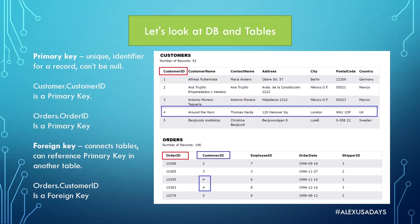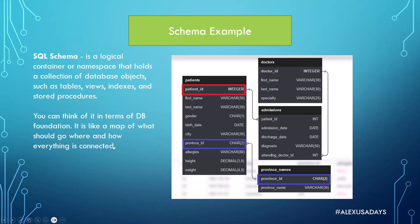There's one more thing to know that exists in SQL: it's called a schema. A schema is a logical container or namespace that holds a collection of database objects such as tables, views, indexes, and stored procedures. You can think of it as the database foundation — like a map of what should go where and how everything is connected. Here is a schema diagram example; we will work with this database today. It shows four tables and you can see how they are connected.